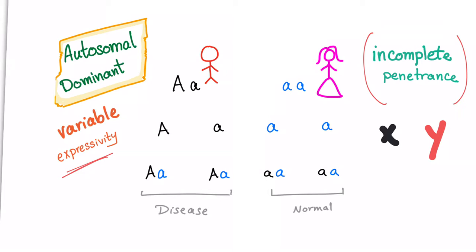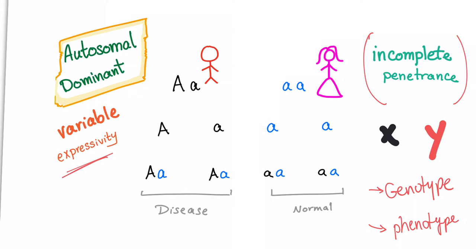Another genetic characteristic of the disease is incomplete penetrance. Incomplete penetrance means that you may have the genotype carrying the disease, but you will not express the phenotype. You may have a bad gene, but it is not expressed. This is incomplete penetrance.